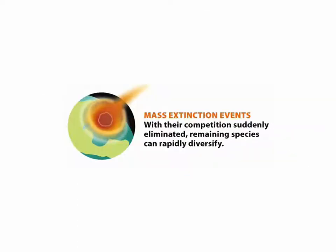Mass extinctions are when a large natural disaster or other event causes the sudden elimination of many groups of species. We see several mass extinctions throughout history. When some groups go extinct, this opens up resources for other groups to use. A good example of this is after the extinction of dinosaurs, when mammals went through an adaptive radiation.